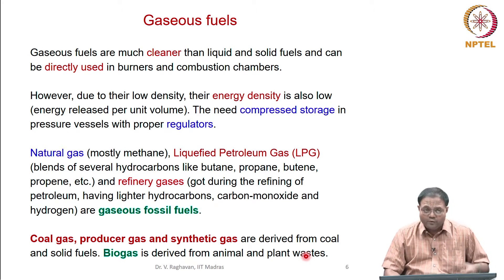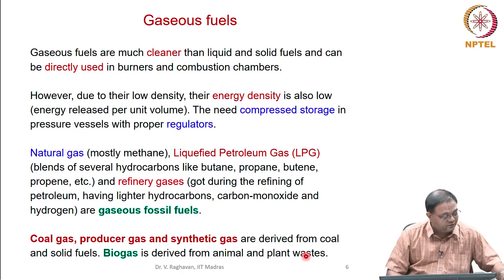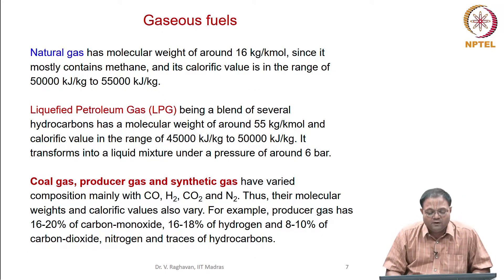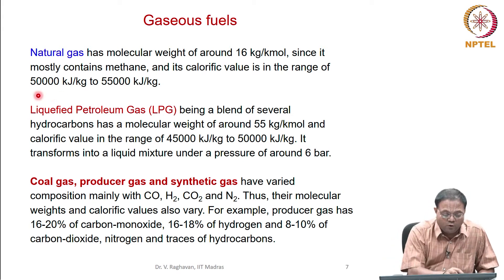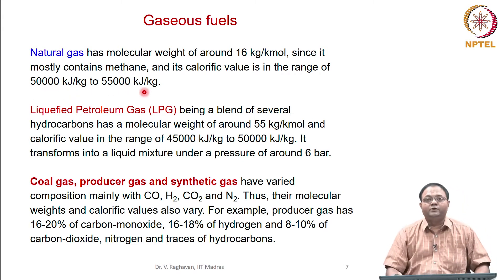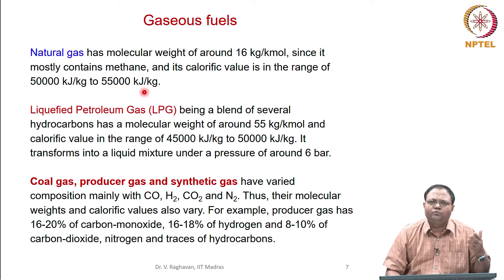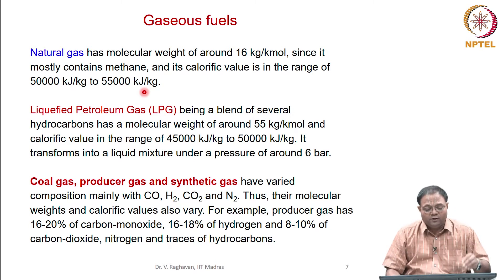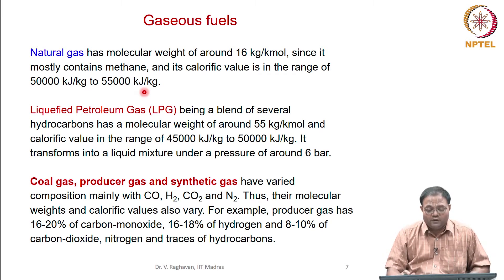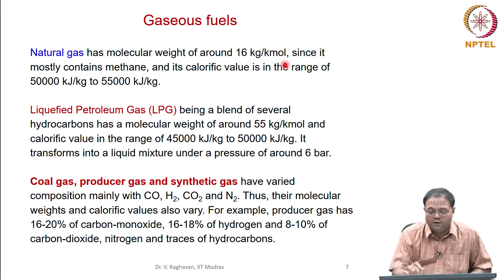Natural gas is basically methane, with a molecular weight of around 16 kg/kmol and a calorific value of about 50,000 to 55,000 kJ/kg. Natural gas is about 90 to 95 percent methane, so we get almost methane's calorific value from it. It is lighter than air, since air has a molecular weight of 28.8 whereas methane is 16.